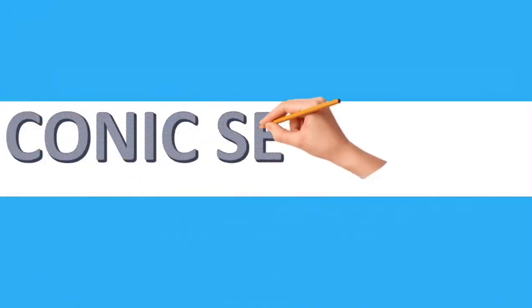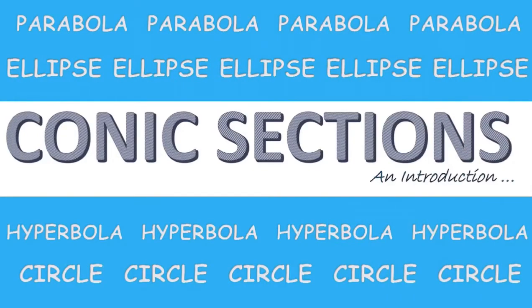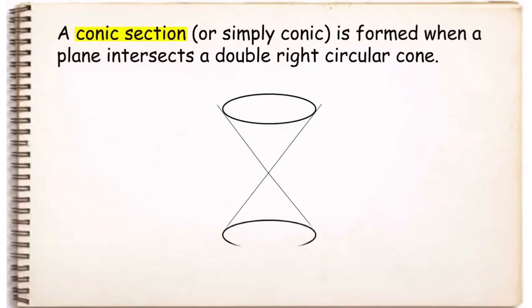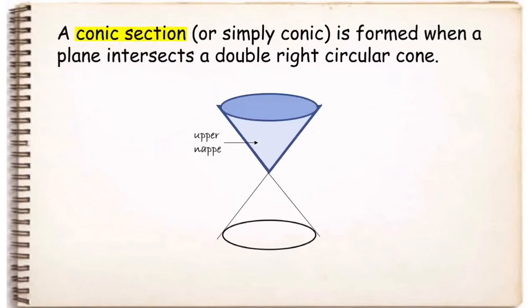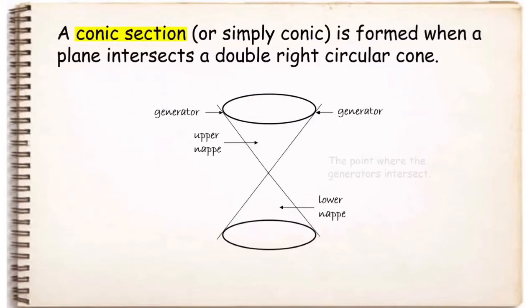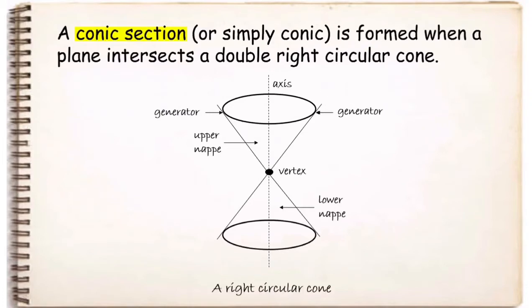In this lesson we will discuss how the conic is formed as well as its definition and properties. A conic section, or simply conic, is formed when a plane intersects a double right circular cone. We have the upper nap and the lower nap. A line lying entirely on the cone is called a generator. The point where the generators intersect is the vertex. The vertical line passing through the vertex is called the axis of the cone. These are the parts of a right circular cone.